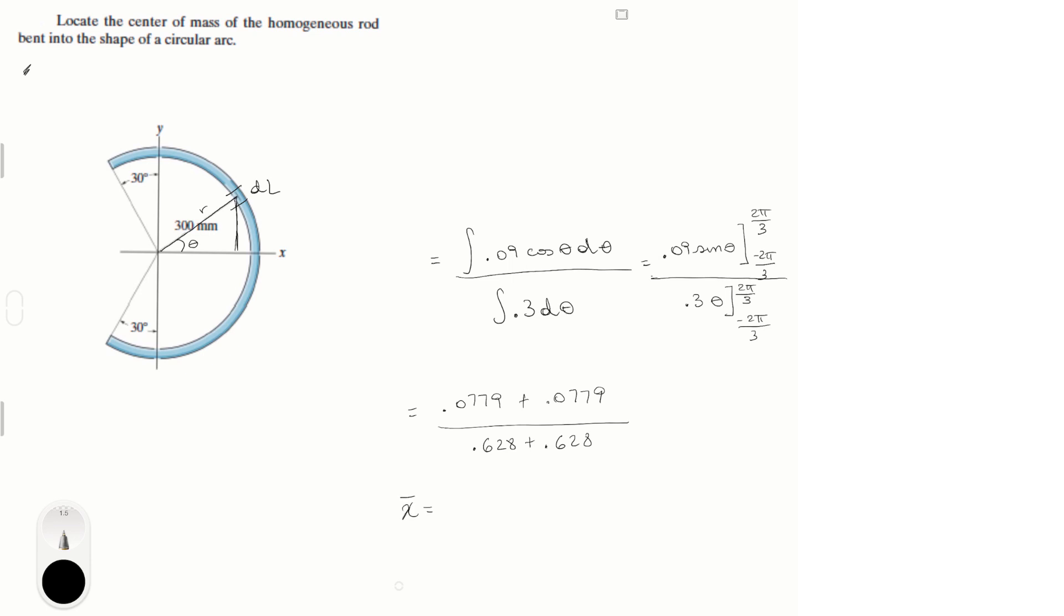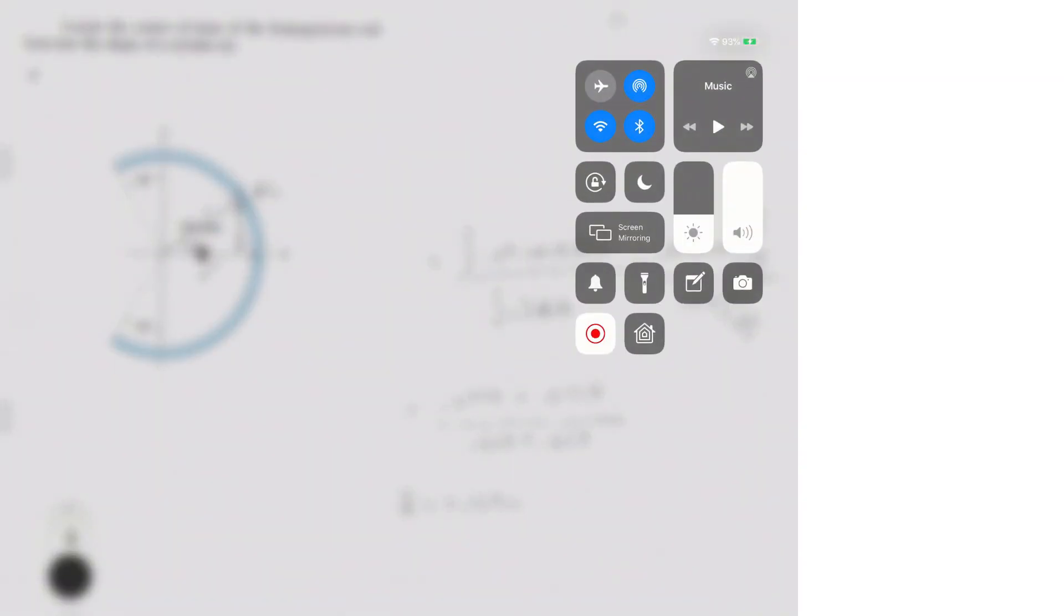And when you solve this, you get that x bar is equal to positive 0.124 meters. So if this is 300, this is somewhere around here. Final answer.